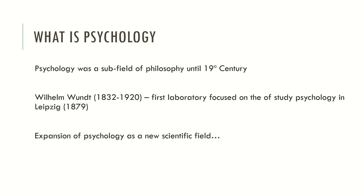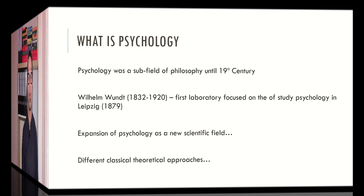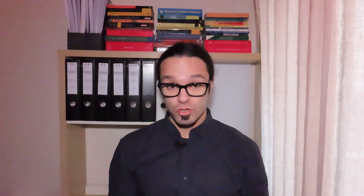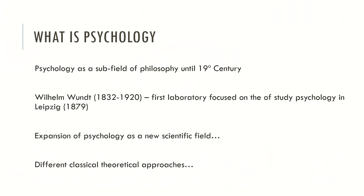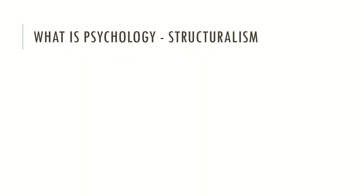The study of psychology was gradually organized around certain schools of thought. The main schools of thought were Structuralism, Functionalism, Behaviorism, Psychoanalytic Theory, Gestalt and the Cognitive Approach. In the early days of psychology, there were two dominant theoretical perspectives regarding how the world worked: Structuralism and Functionalism.